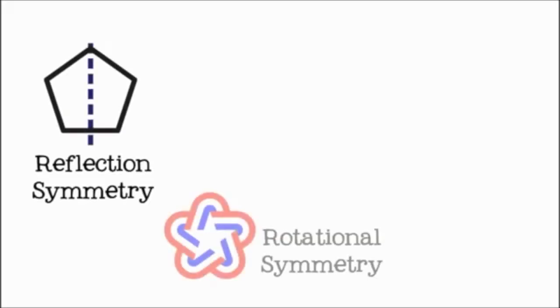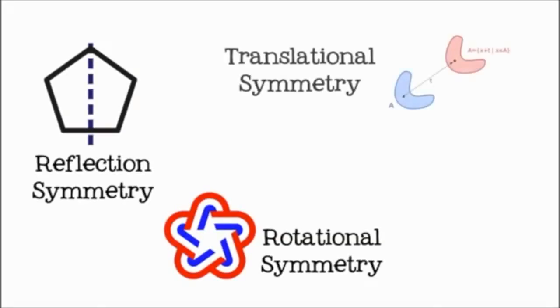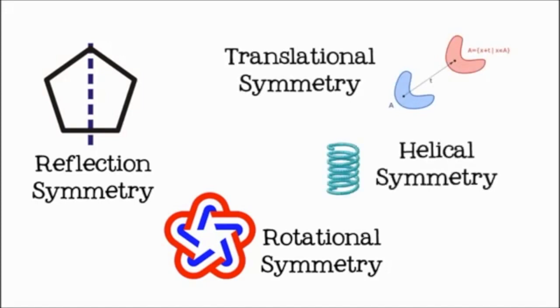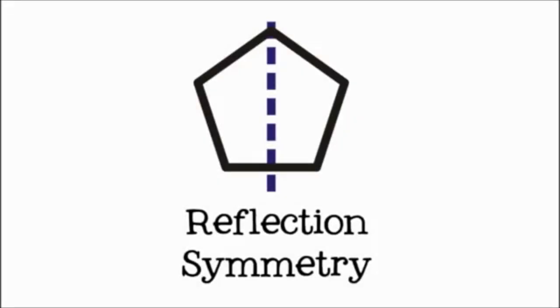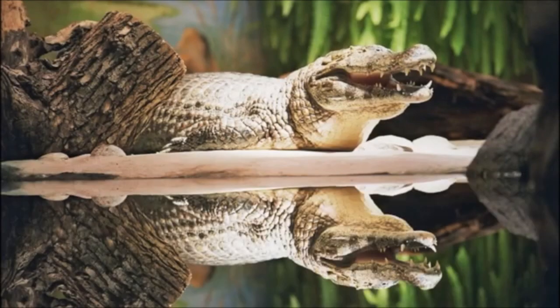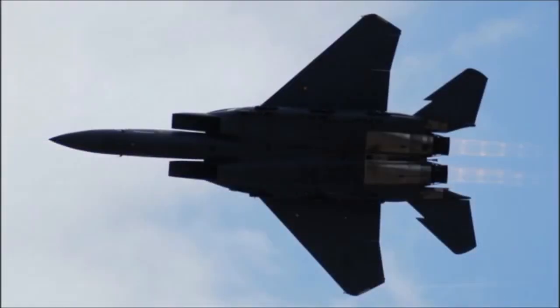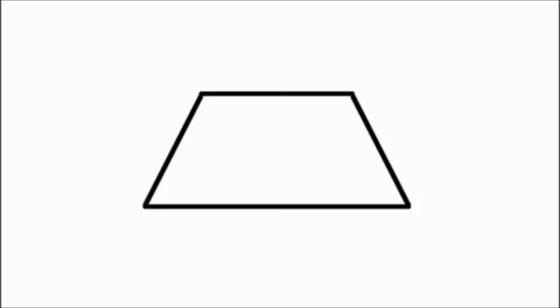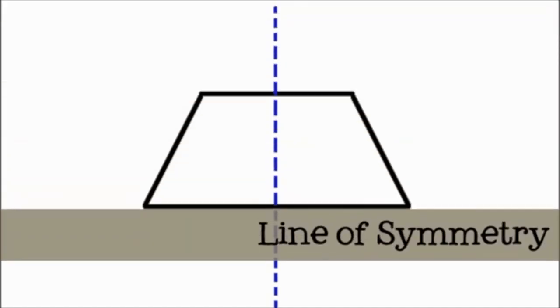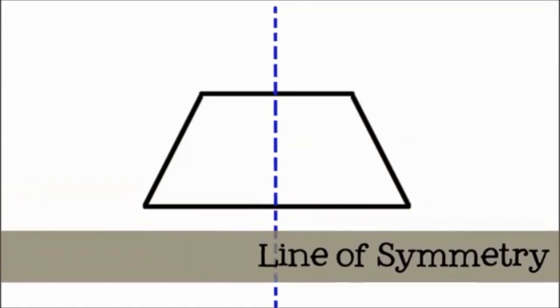There are many different types of geometric symmetry, but today we are only going to talk about the simplest form: reflectional symmetry. An object or image that has reflectional symmetry is like a mirror image. If you were to draw an imaginary line down the center of a symmetrical object and fold it in half along that line, the shapes would match up. This imaginary line is called a line of symmetry.